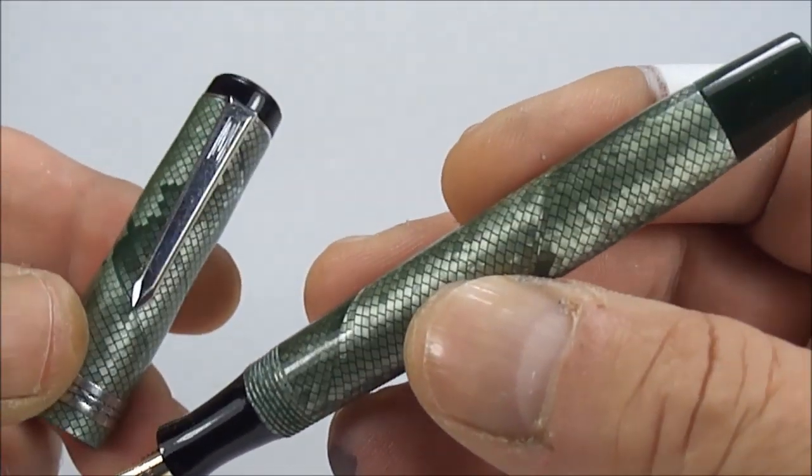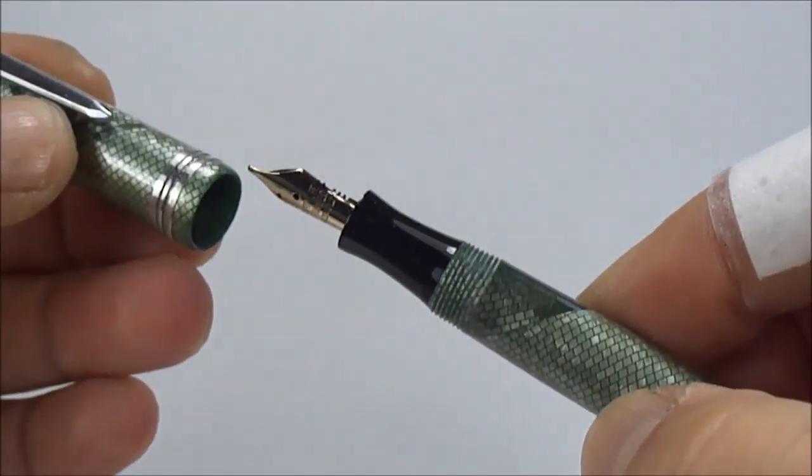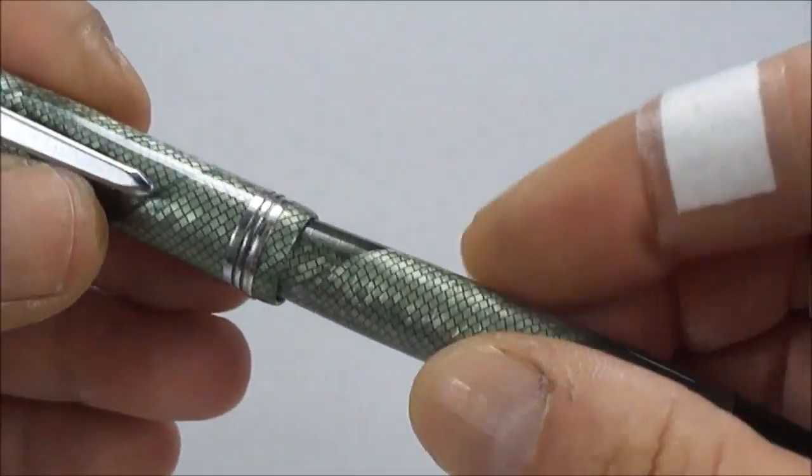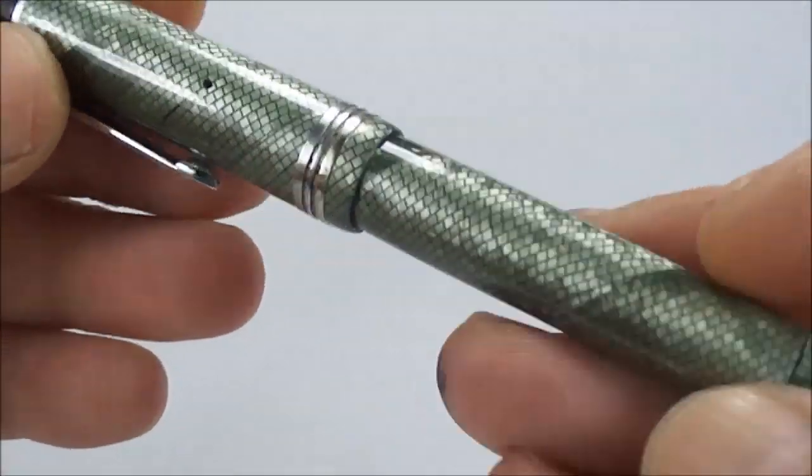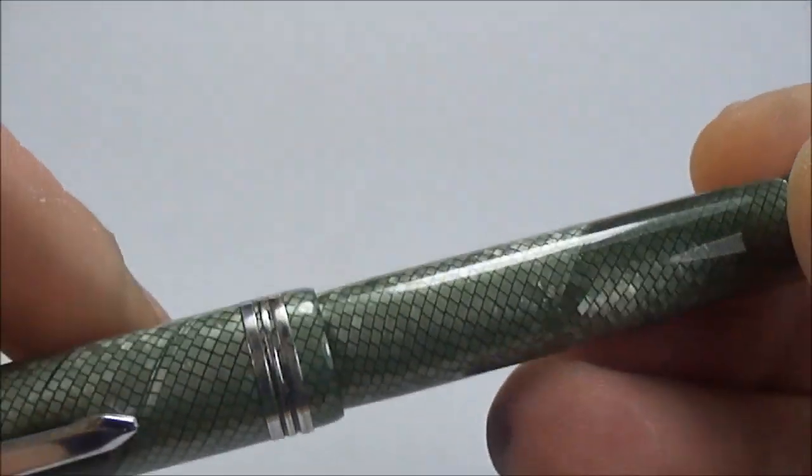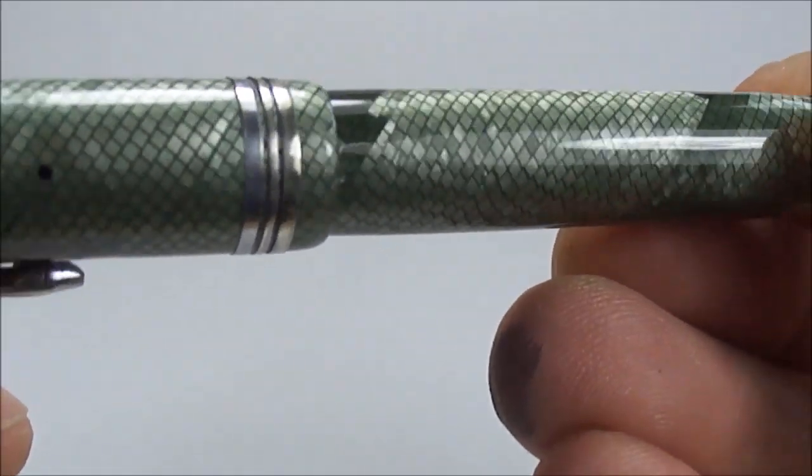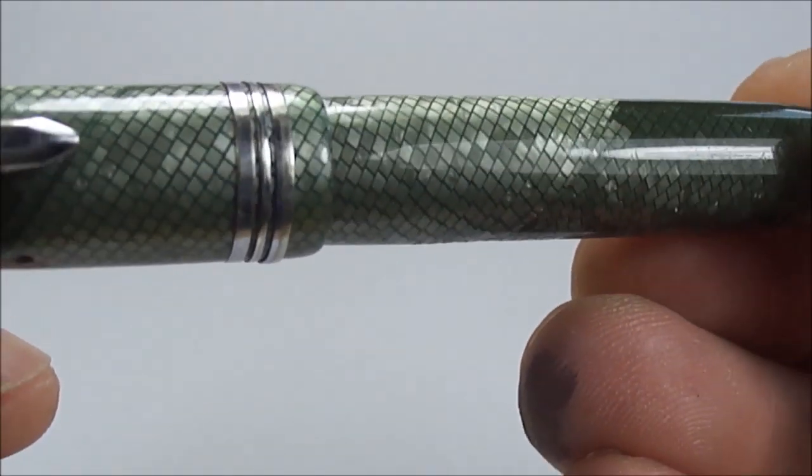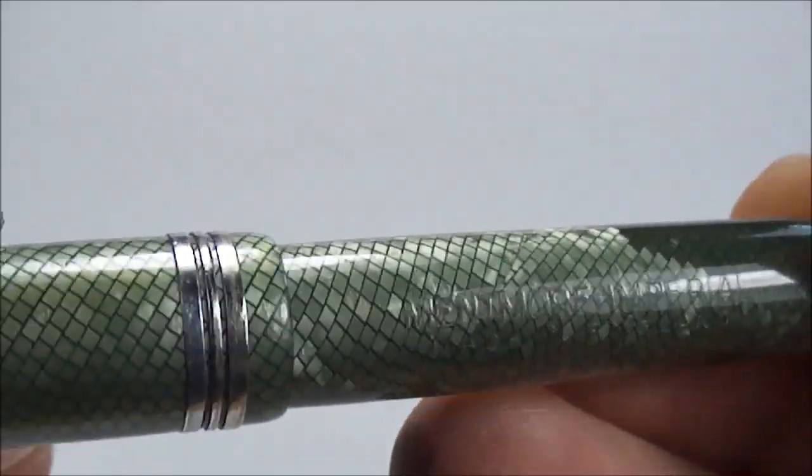So there we have it, the Mentmore Imperial from around the 1940s. As we said earlier, in this very attractive and in my opinion very sought-after snakeskin. Actually, one thing I've not actually shown you - if we can find it over the camera, just bear with me. It's always a little bit difficult working over the camera. I think that's it there.